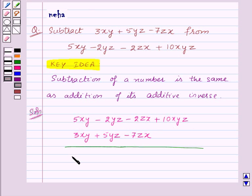Now, to get the additive inverse of this expression, we will change the signs of all the terms from plus to minus and from minus to plus. The additive inverse of 3xy is minus 3xy. Additive inverse of plus 5yz is minus 5yz and additive inverse of minus 7zx is plus 7zx.